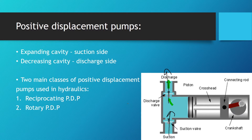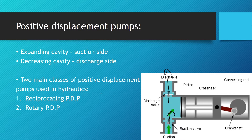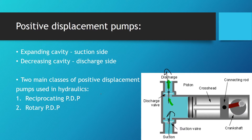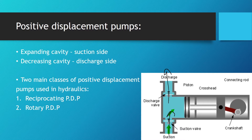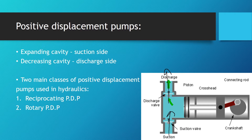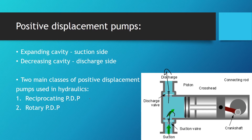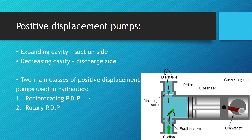Positive displacement pumps have two groups depending on how the suppressing element moves. In the piston pump, the suppressing element — the one that pushes the working fluid — is the piston, which is in direct contact with the working fluid.